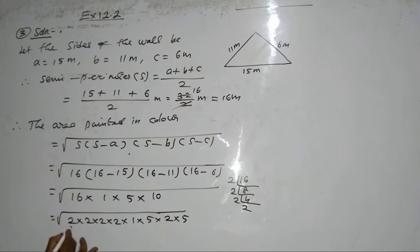Now, you can take the pair. 2 squared is 2. Again, 2 squared is 2. Again, 5 squared is 5. And this 2 has no pair, it becomes 2. So, 2 into 2 is 4, 4 into 5 is 20. 20 root 2 meter squared.